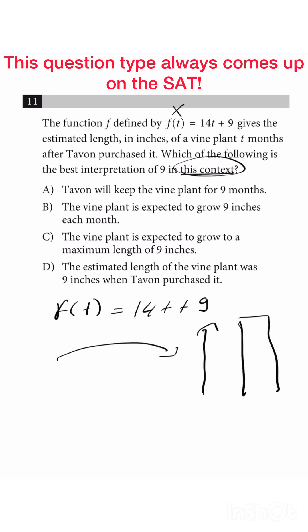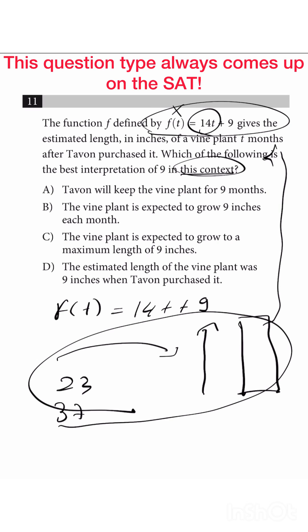So what does that mean? In one month, maybe it will be 23 centimeters, right? In two months, it will be 37. So as you can see, when you have something that is growing and you're trying to find it in the data, like in the equation, it needs to be the one with the variable.